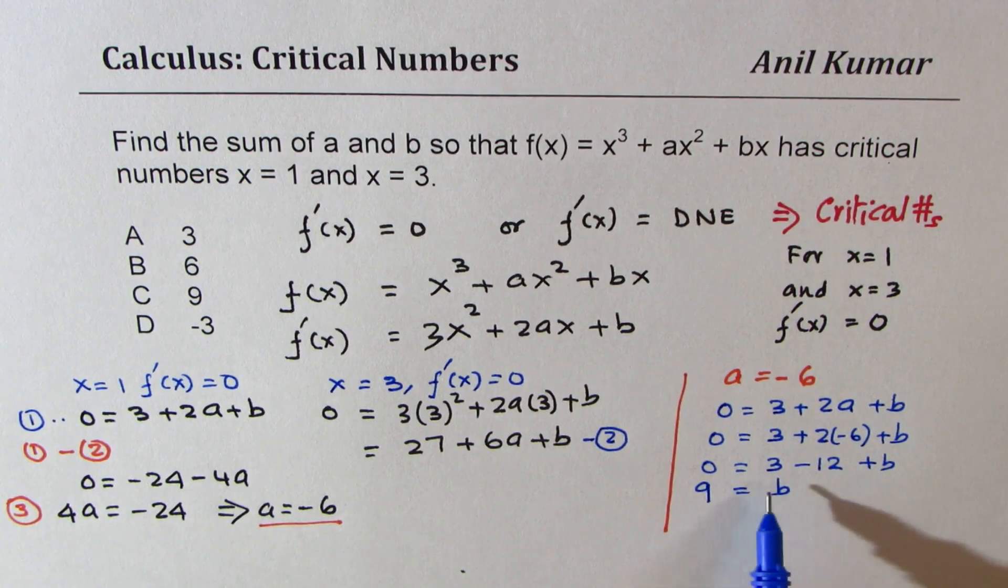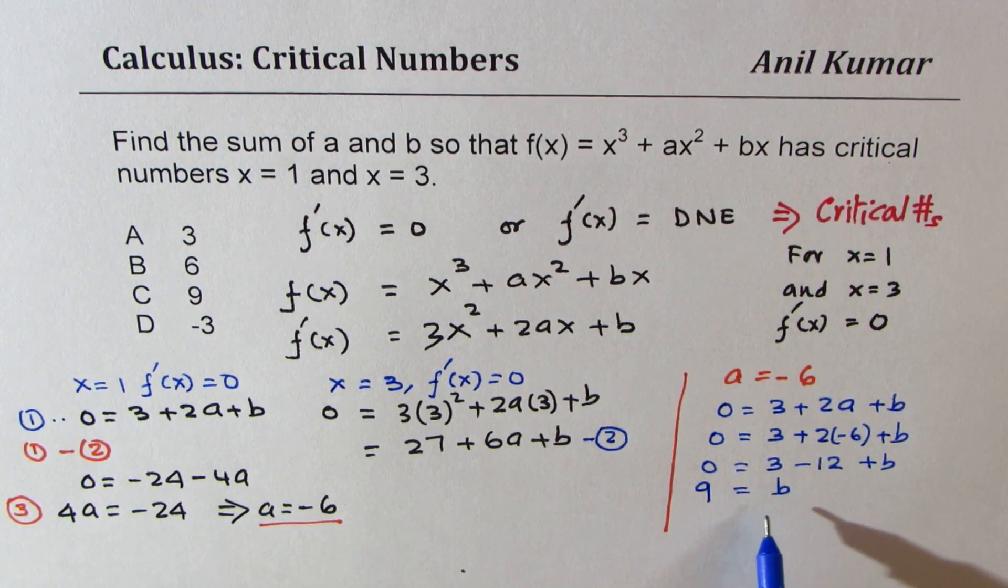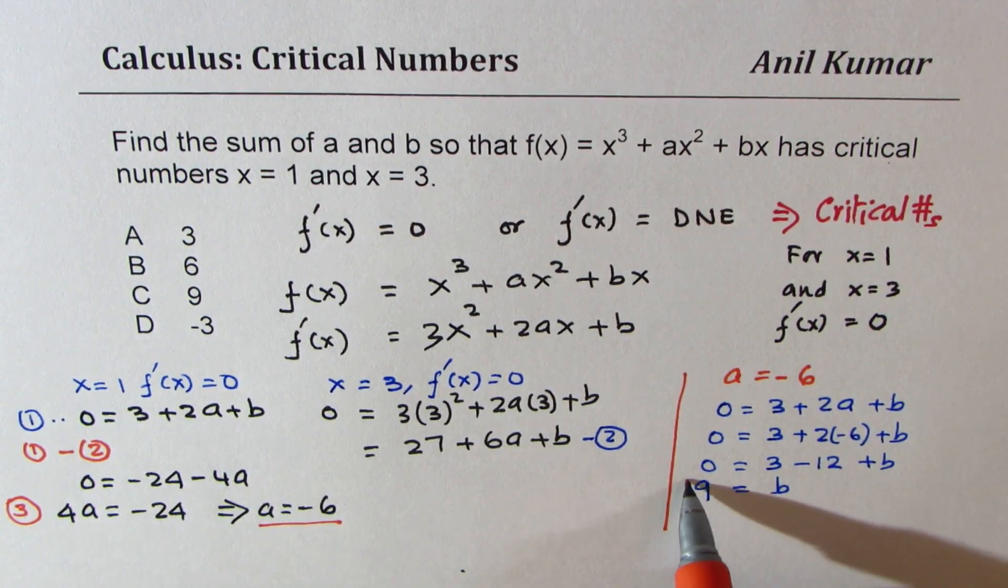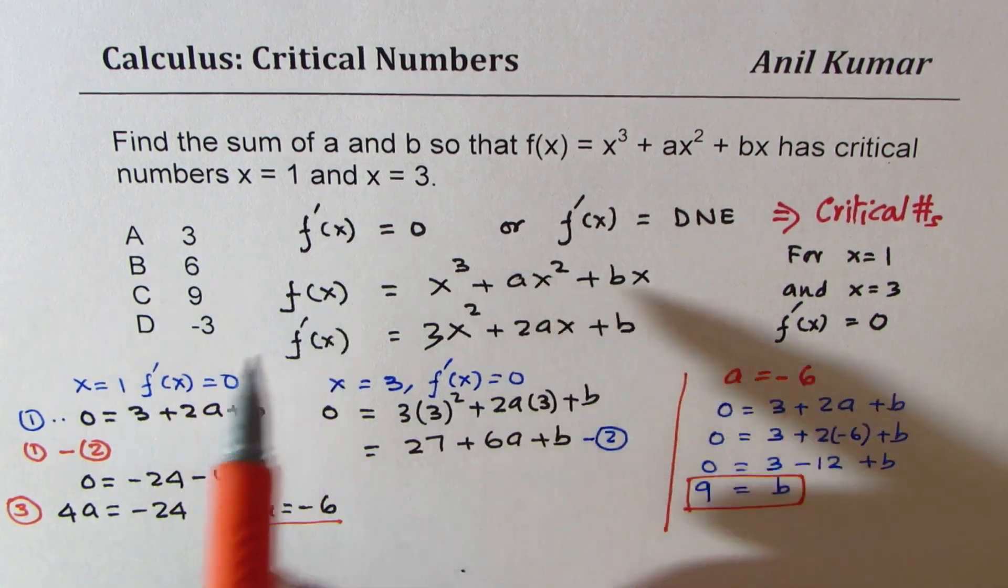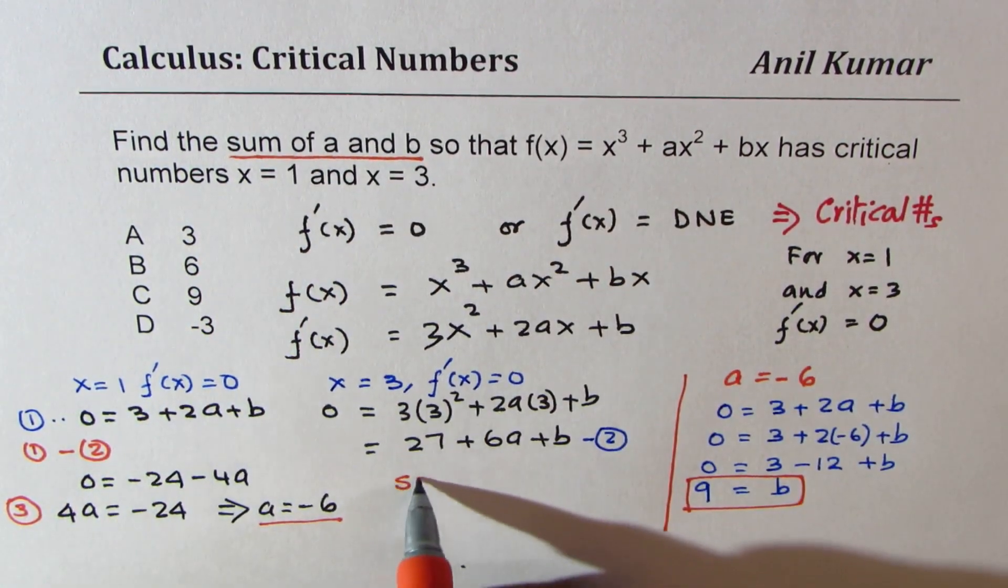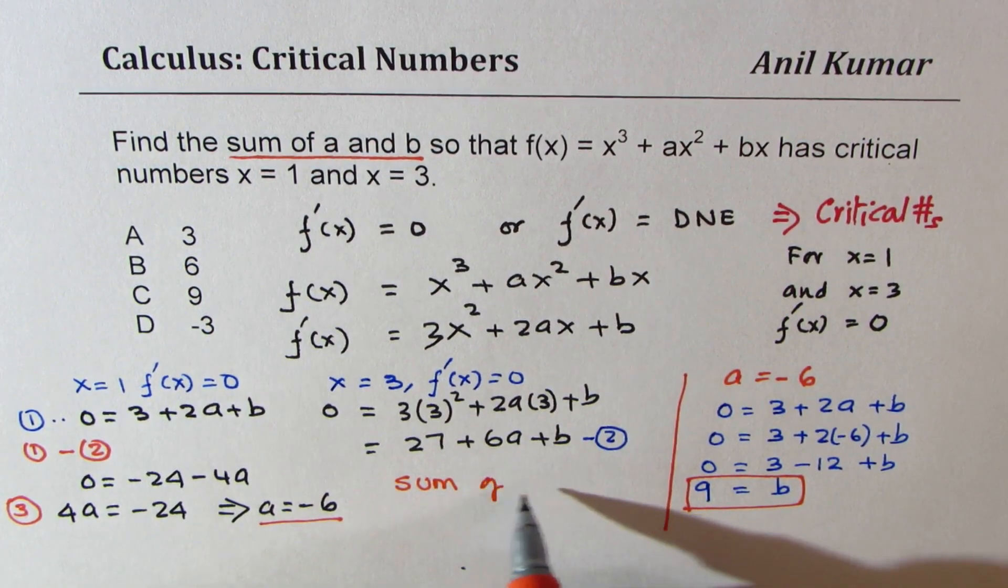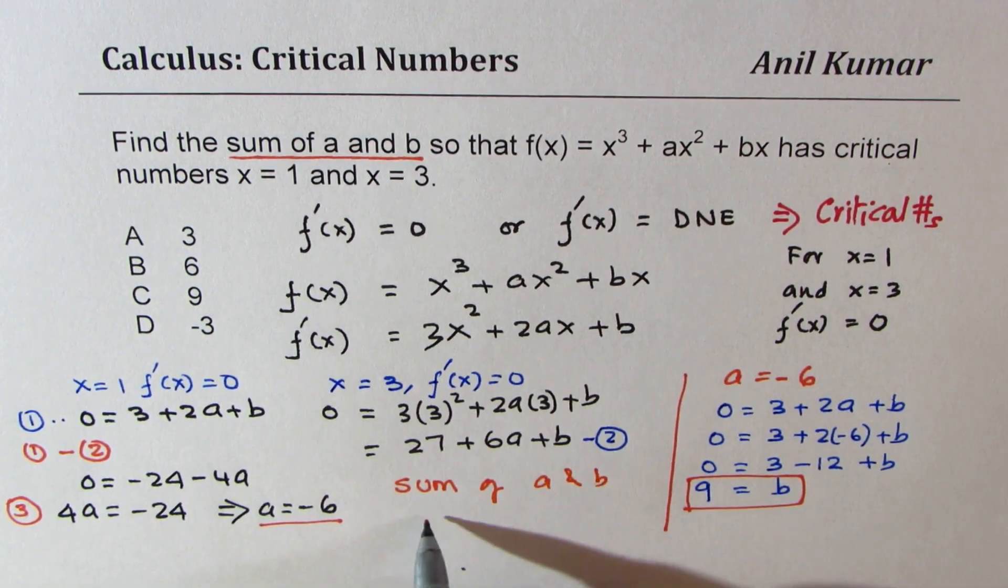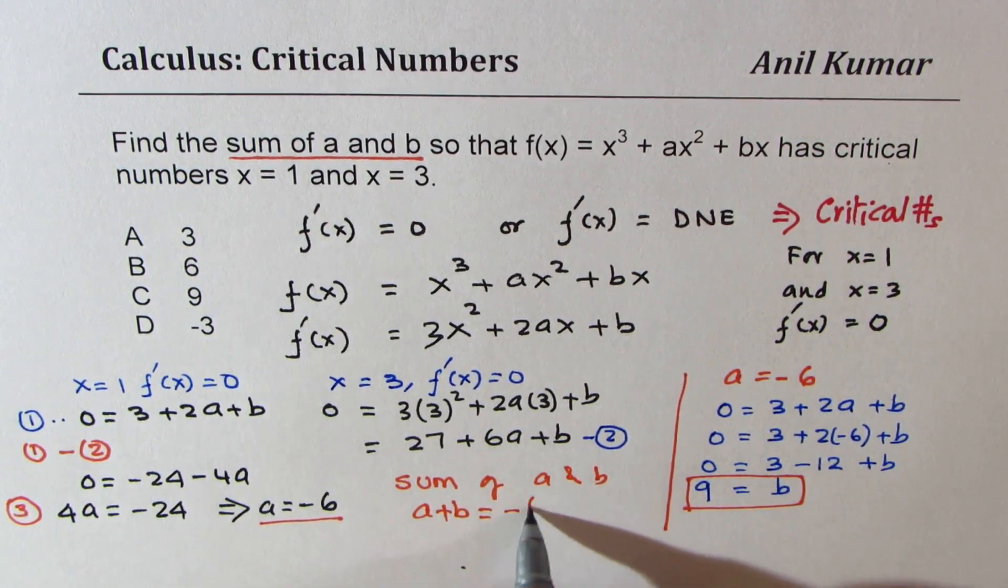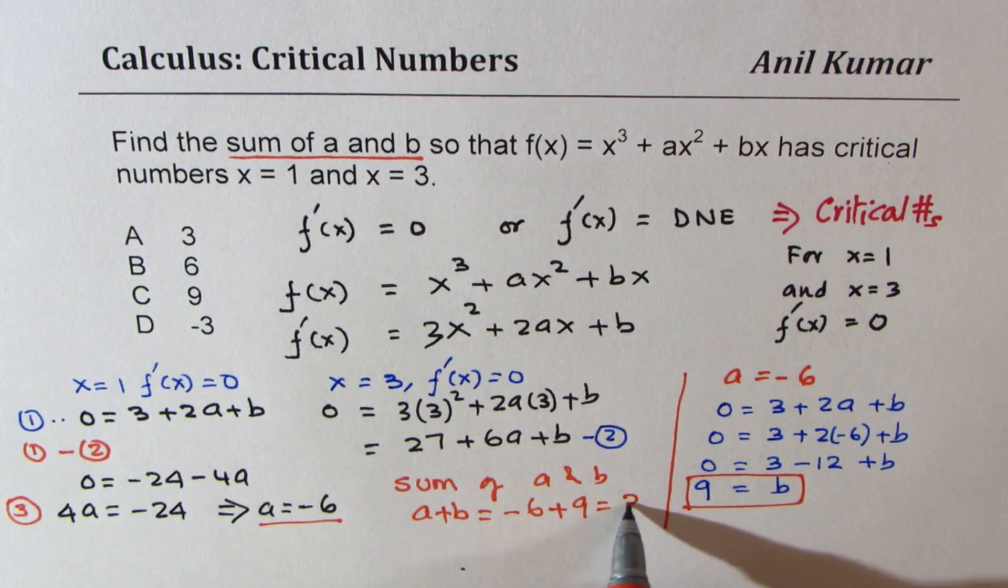So if b is 9, then this equation is true. So we get a = -6 and b = 9. What we need is the sum of a and b. So we can write sum of a and b, that means a + b = -6 + 9, which gives us 3.